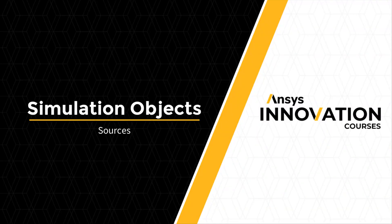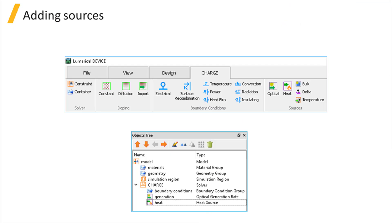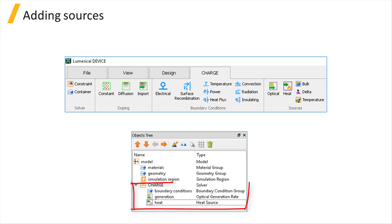In this unit, we will get familiar with the variety of sources available for charge simulations. Source objects can be added to the simulation by clicking on the corresponding buttons in the sources section under the charge tab. Once added, they will appear under the charge solver object in the objects tree.